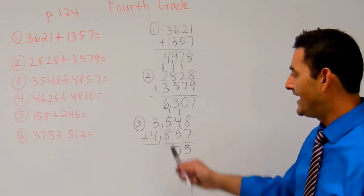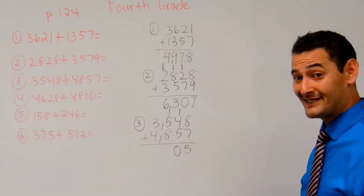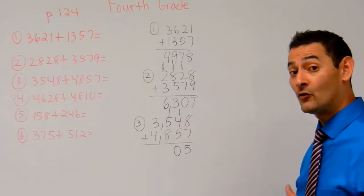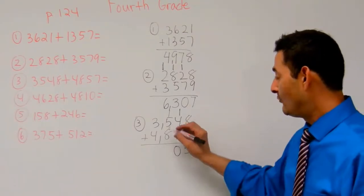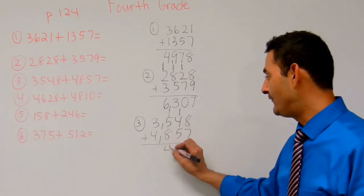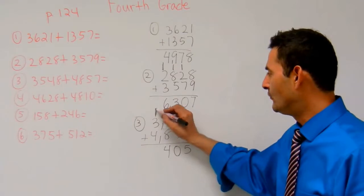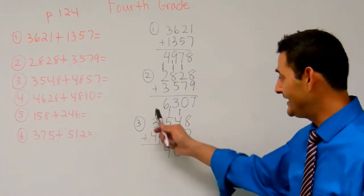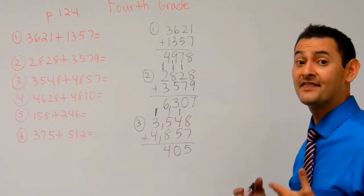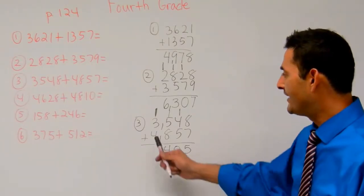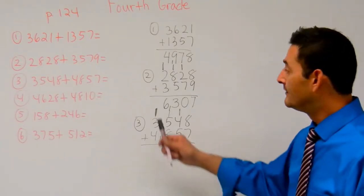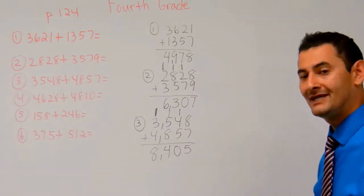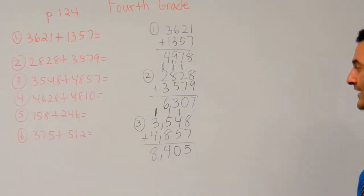Now I've got 8 plus 5, that's 13, plus 1 more is 14. Now I've got 14 100's. I'm going to keep 4 of the 100's and move 10 of those 100's — which is 1,000 — over to the 1,000's place. Now I've got 4 plus 3 is 7, plus 1 more is 8. So the answer is going to be 8,405.